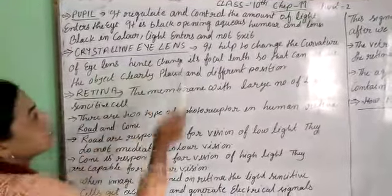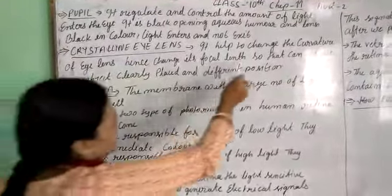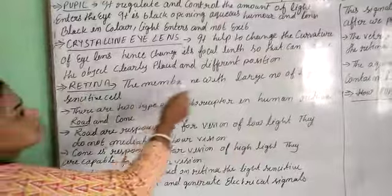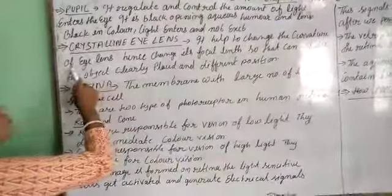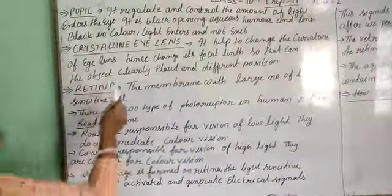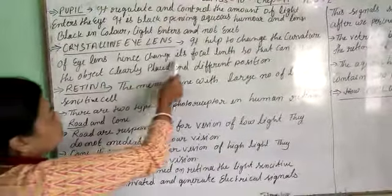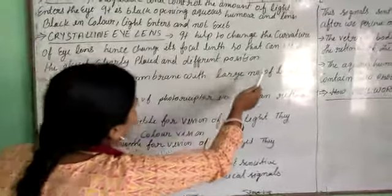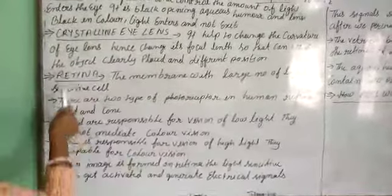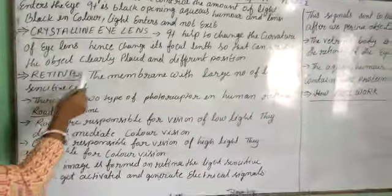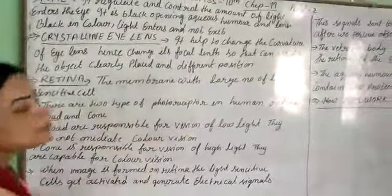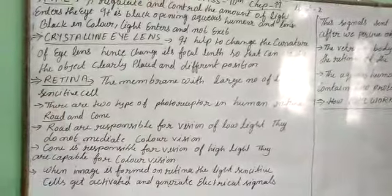Next is the crystalline eye lens. It helps to change the curvature of the eye lens, hence changing its focal length, so that we can see objects clearly at different positions and distances.